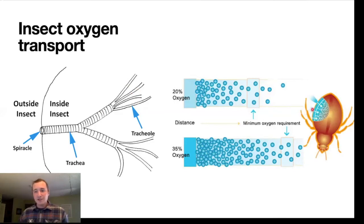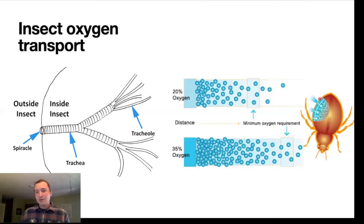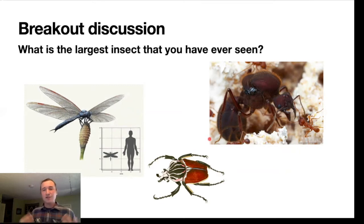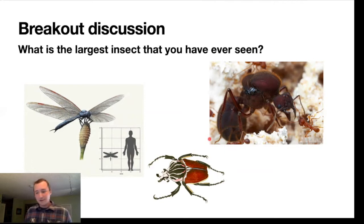The oxygen diffuses in, but each cell needs to be at least a certain distance to the outside of the insect. We've covered the basic physiological principles of why insects are small: it's due to the constraint of supplying oxygen to the tissues at the very center of their bodies.